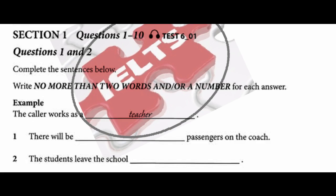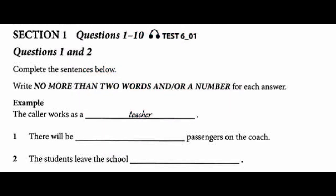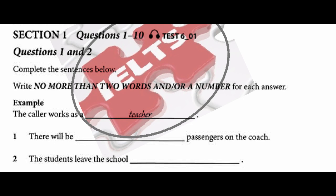You will hear a number of different recordings and you'll have to answer questions on what you hear. There'll be time for you to read the instructions and questions and you'll have a chance to check your work. All the recordings will be played once only. The test is in four sections. At the end of the test, you'll be given ten minutes to transfer your answers to an answer sheet.